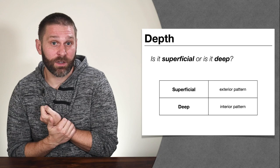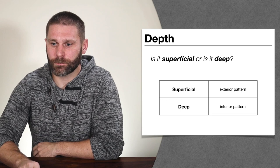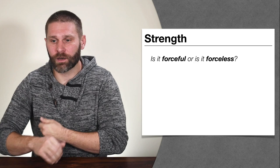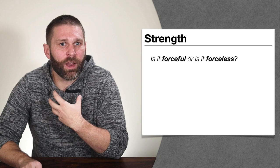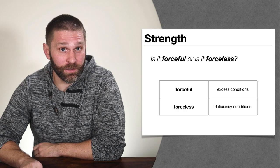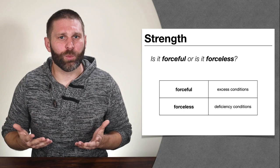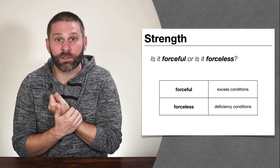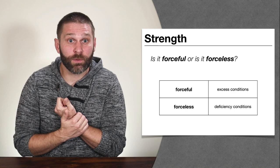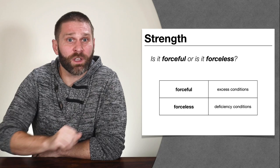Strength tells us about the strength of either the pathogen or the right qi. A forceful pulse indicates an excess condition; a forceless pulse indicates a deficiency condition. So you can combine these: a floating, rapid, forceful pulse means exterior, heat, excess — an excess exterior heat condition. These attributes work together and should make sense when combined.